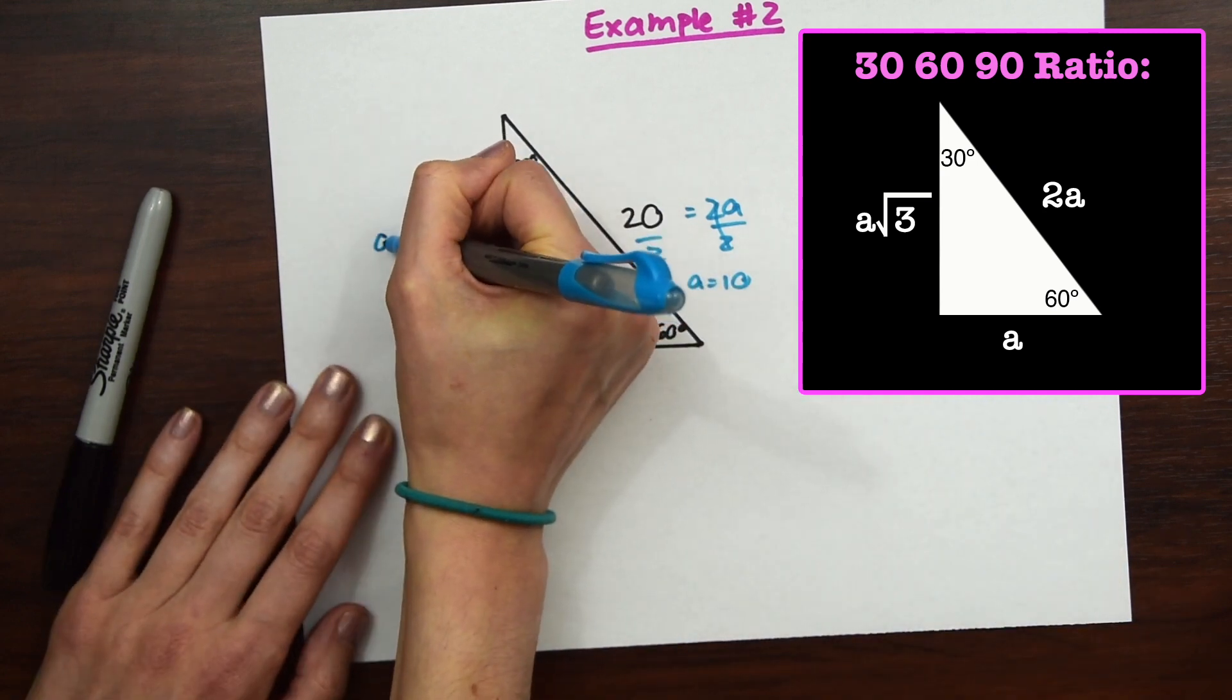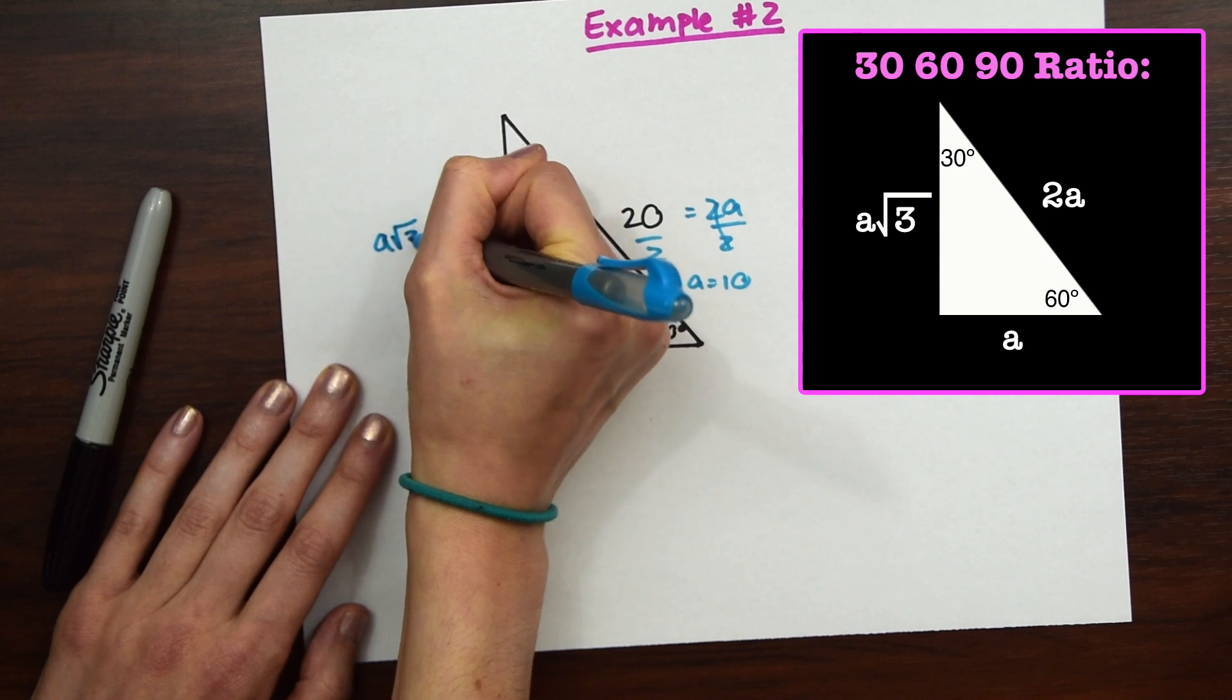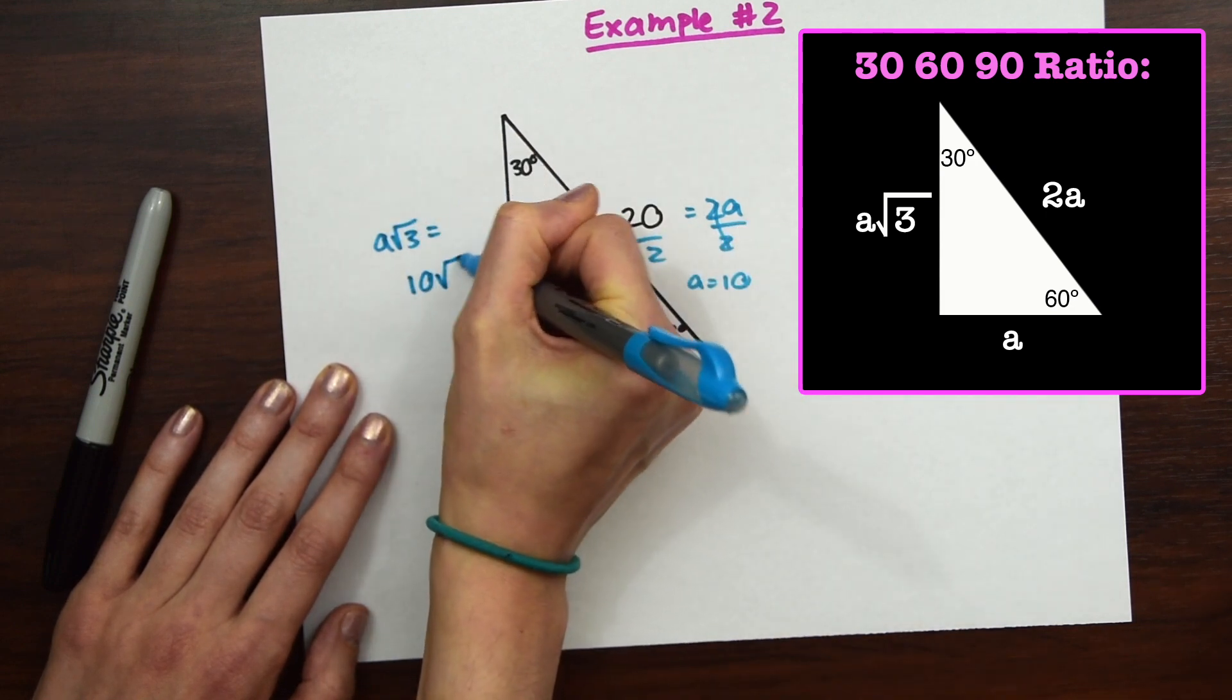And then on this side, A is A rad 3. So we know A is 10, so we know that this will be 10 rad 3.